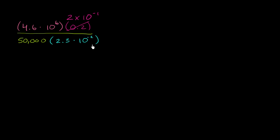Now, if we look in the denominator, we have this part written in scientific notation, but this green part is not. But we could easily write it as - this is 5 ten thousands. 10 thousand is 10 to the fourth. So this is the same thing as 5 times 10 to the fourth power. And you see that it has 1, 2, 3, 4 zeros.